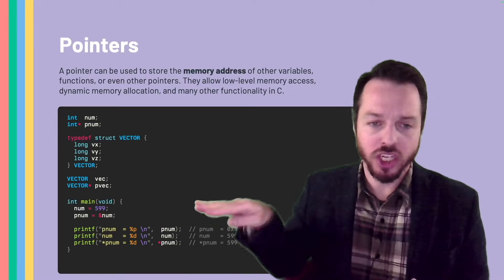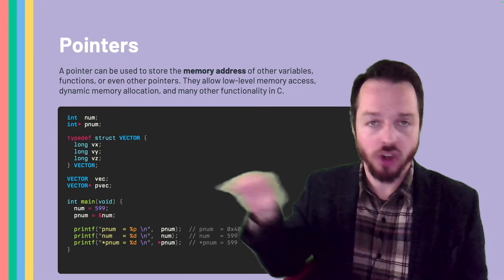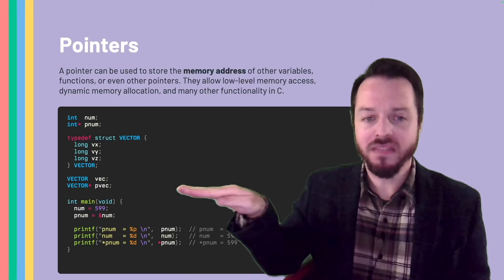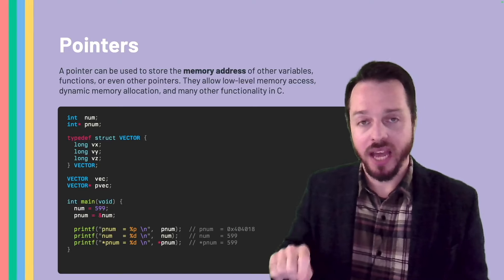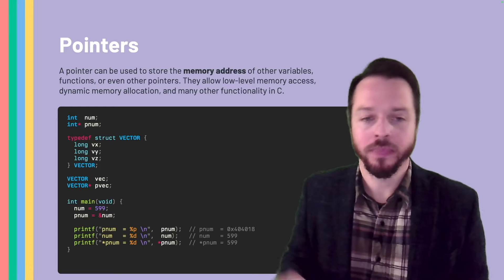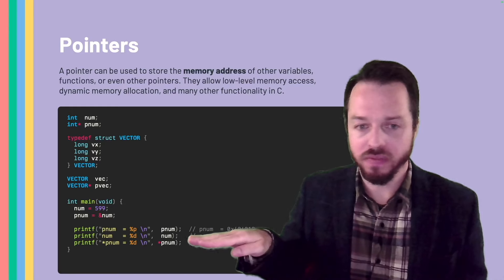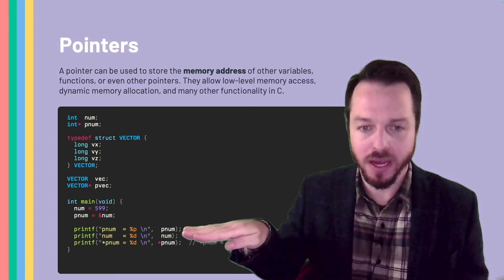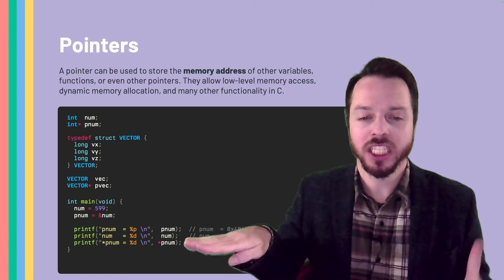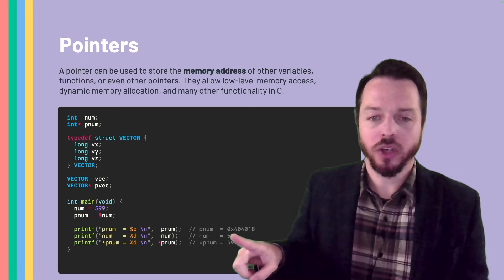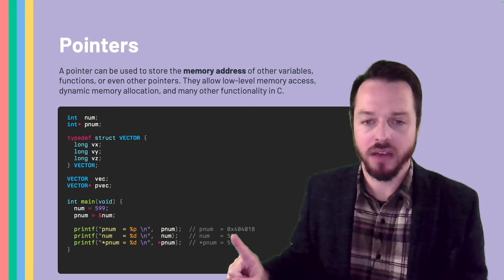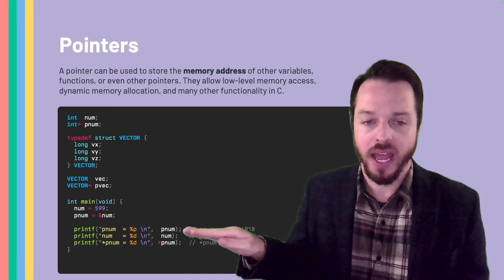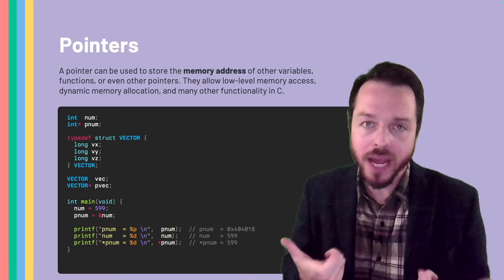That is how it works. And these are just integers, but it would be the same thing if we were pointing to a struct, where I can have a struct initializing x, y, and z inside, and then a pointer: `pvec = &vec`. Then I just have a pointer to the start of that struct in memory. If I print pnum directly, what do you think is going to be inside? It's going to have a memory address — let's say hexadecimal 0x404018. So pnum holds that memory address; that is its content.